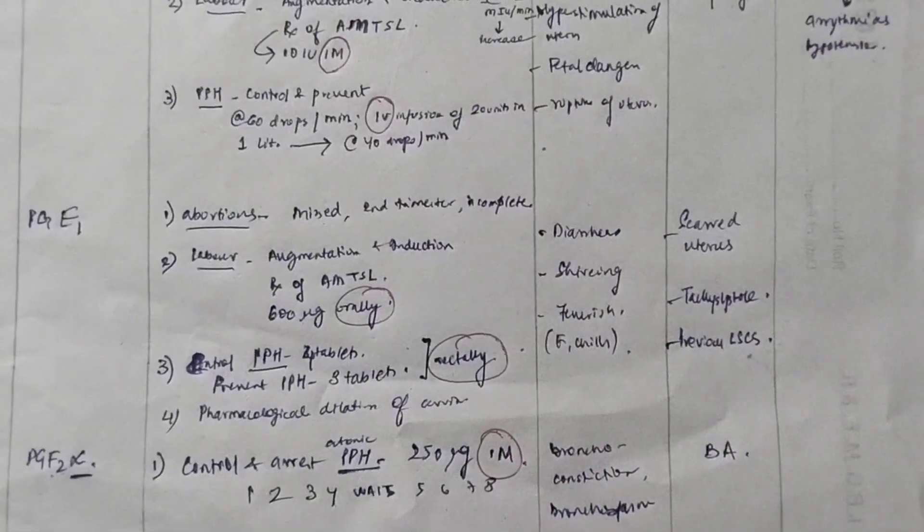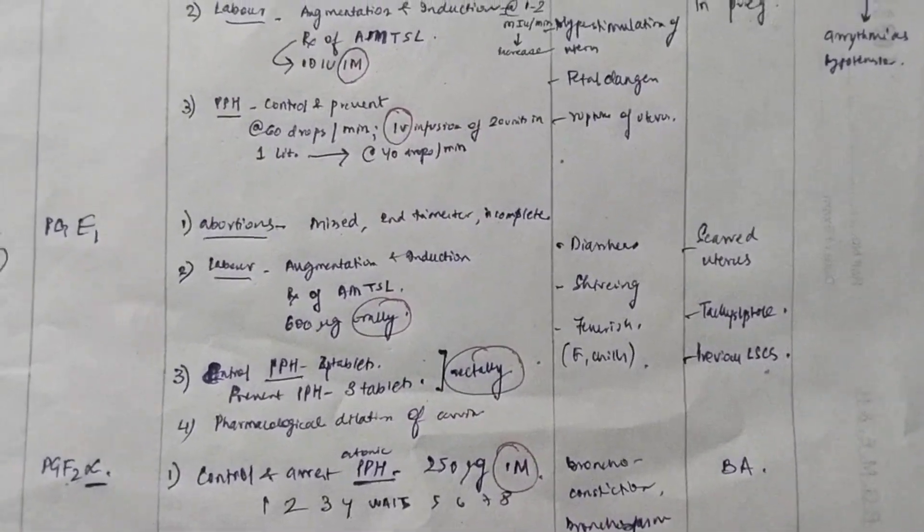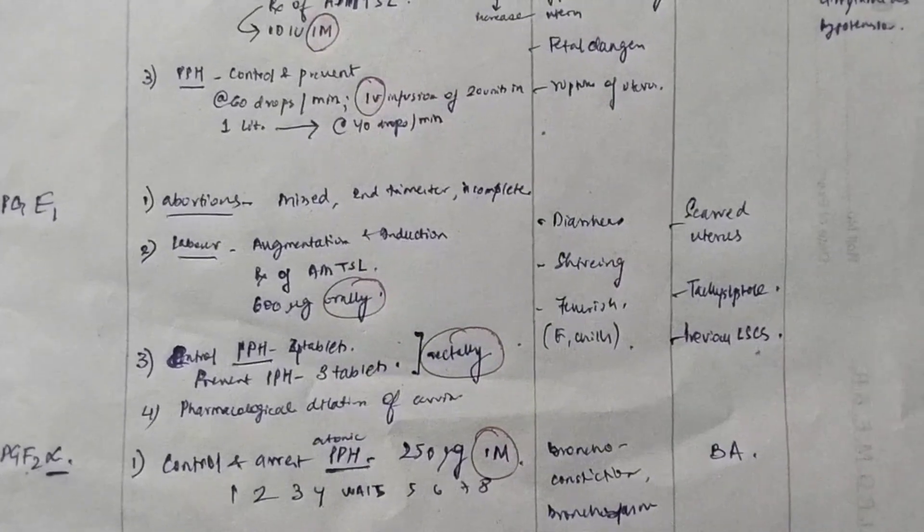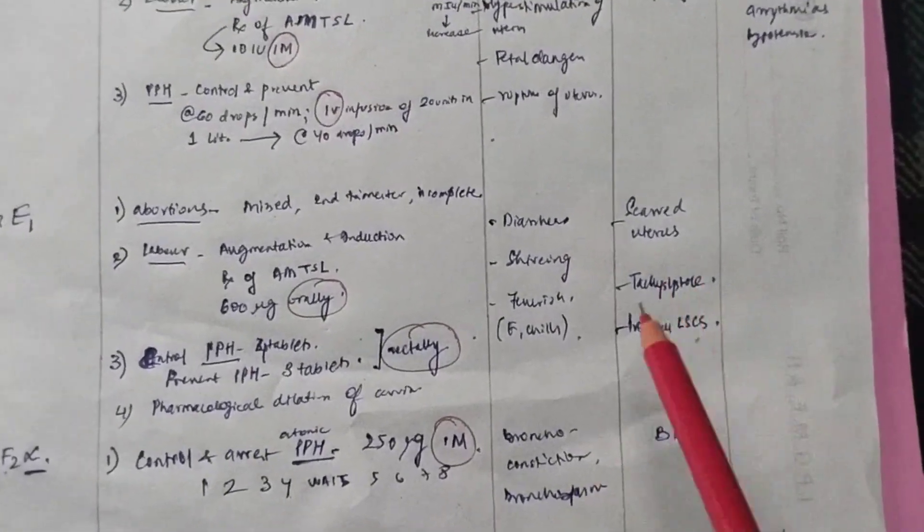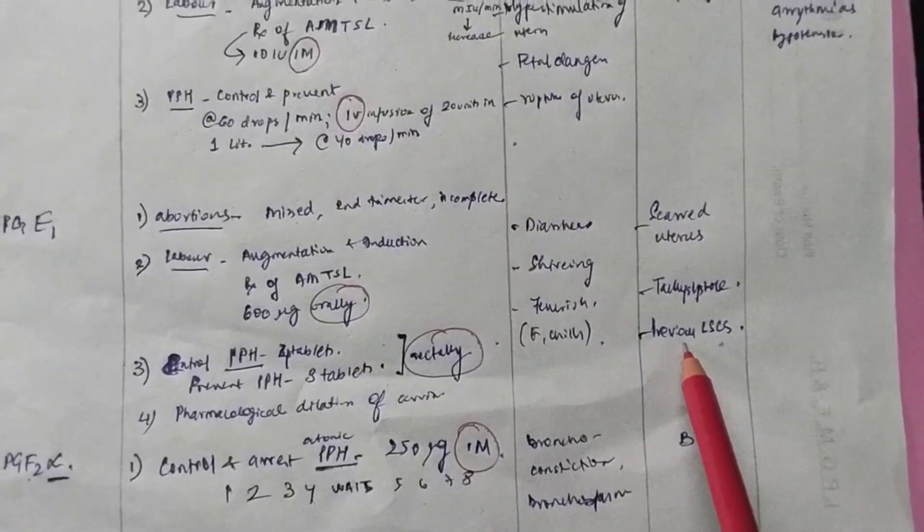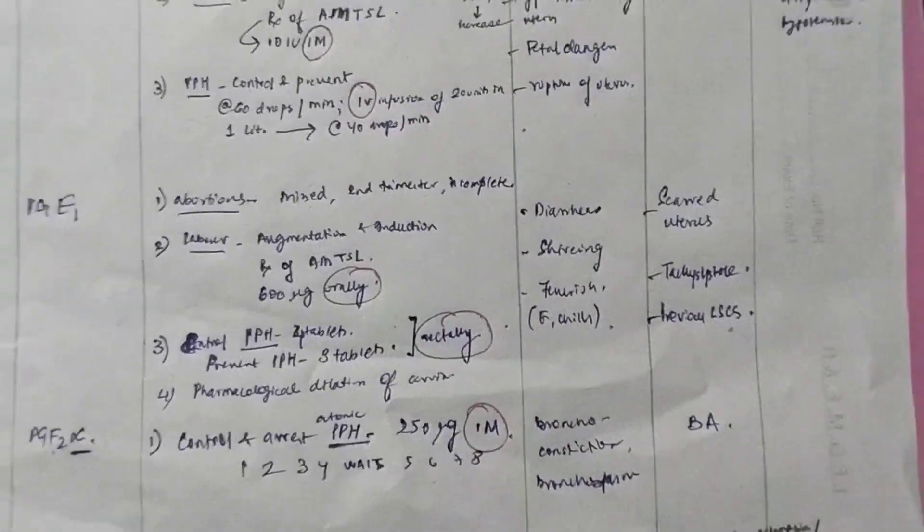What are the side effects of these drugs? Side effects of misoprostol. You have to say, fever. Fever, chills, shivering. These are the side effects. And very important, they are not used in case of scarred uterus. And if there is previous lower segment cesarean section.